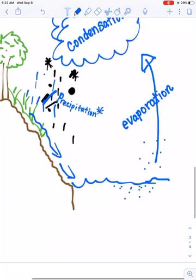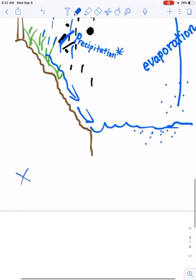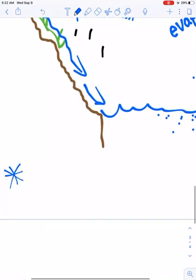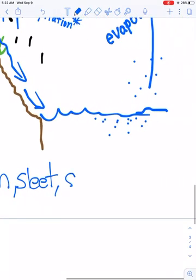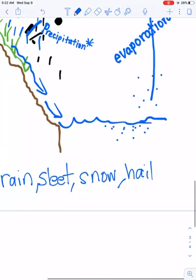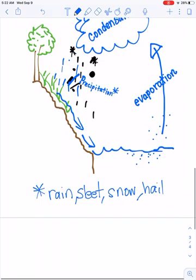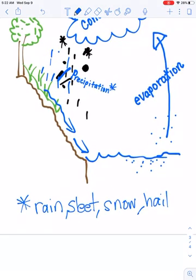Because precipitation can include, and let's put a little note down here at the bottom. Rain, sleet, snow, or hail, or any other form of water that comes from the clouds.